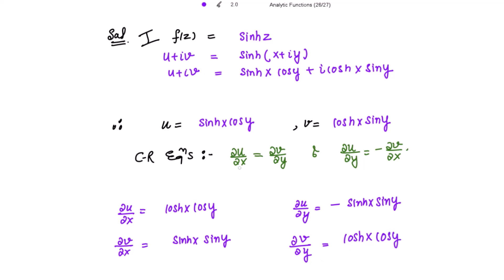Notice that ∂u/∂x = cosh(x)cos(y) equals ∂v/∂y = cosh(x)cos(y), so the first CR equation is satisfied. For the second, ∂u/∂y = −sinh(x)sin(y) and ∂v/∂x = sinh(x)sin(y), so ∂u/∂y equals the negative of ∂v/∂x. Hence the CR equations are satisfied.